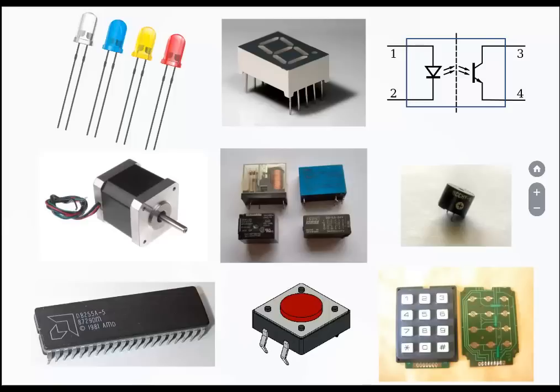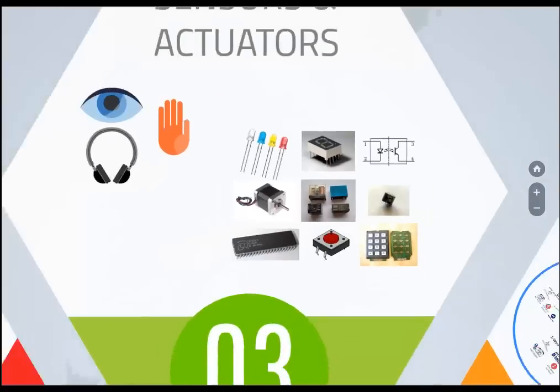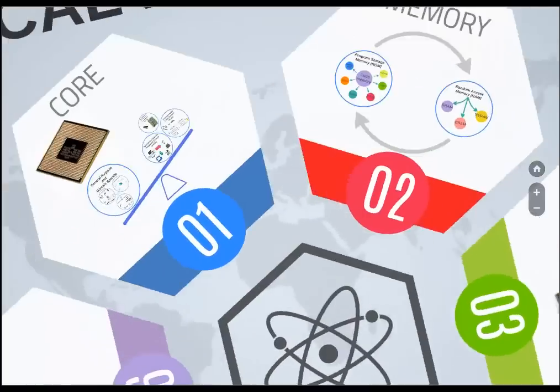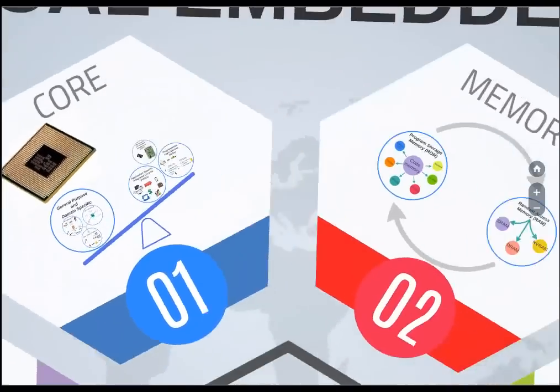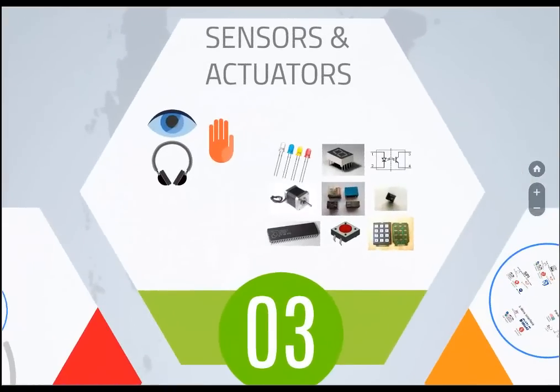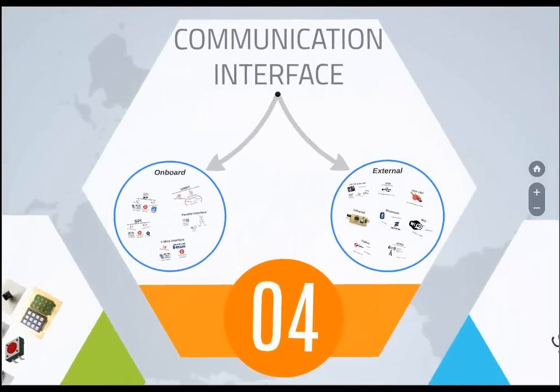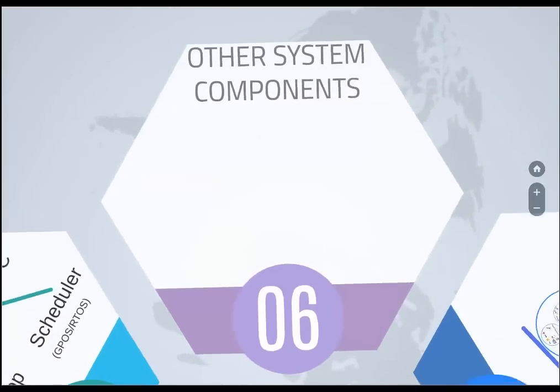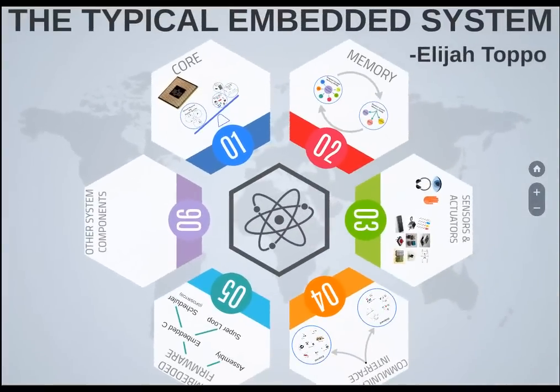With this, we come to an end of part one of this section, typical embedded systems. What we have discussed in this video are the different types of core options, the different type of memory options, and different types of sensors and actuators. In the next video, we'll talk about communication interfaces, embedded firmware, and other system components. Thank you for watching this video. If you liked the video, give it a thumbs up. Thank you for watching once again. Have a great day.